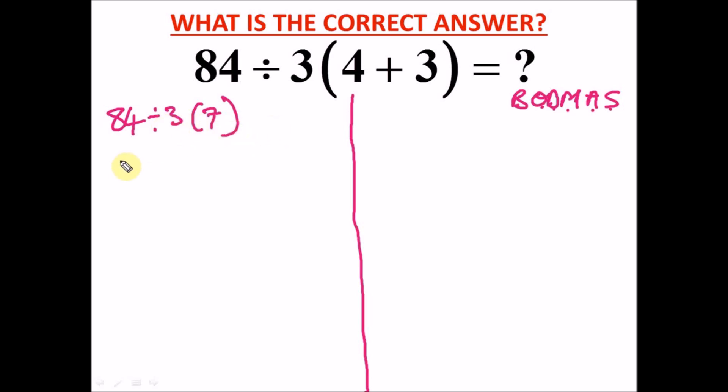And you say okay, the next thing to do is division. So 84 divided by 21 will give us 4. But this is actually wrong. Now what's the right way?